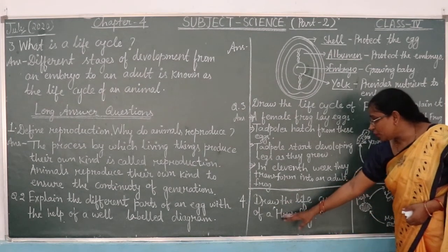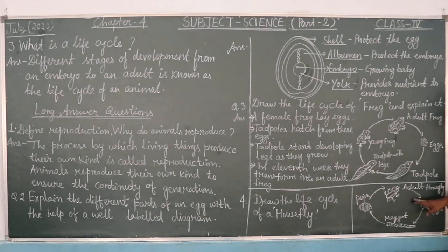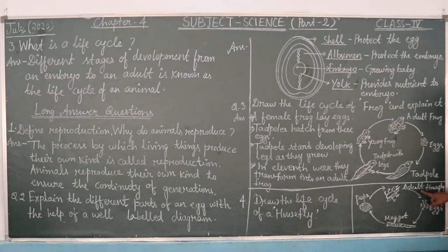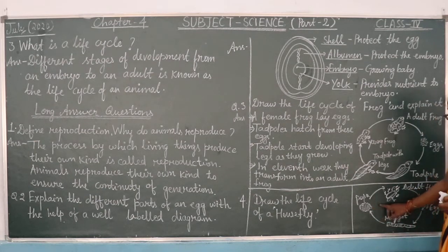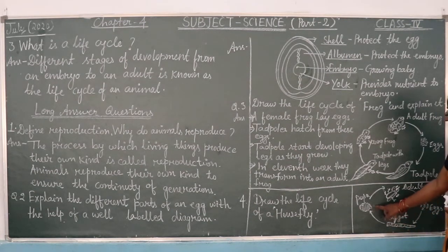Question number 4: draw the life cycle of a housefly. You can draw the life cycle of a housefly. The housefly lays eggs, then the eggs hatch into larvae. The life cycle continues through its stages.